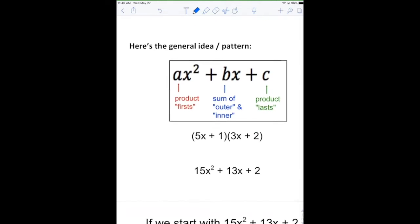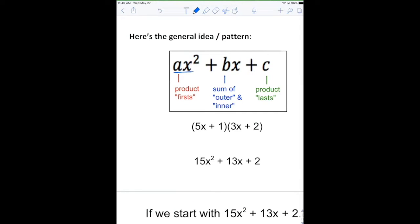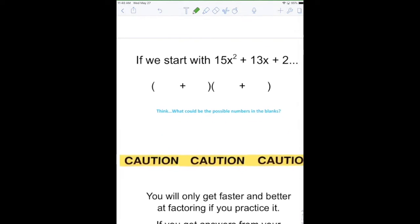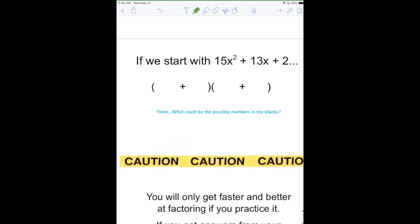This ax squared is always going to be the product of our firsts. It's going to be this 5x times this 3x. This c here is always going to be the product of our lasts. This 1 times this 2. The problem is figuring out how do we get the middle term. That's going to be the product of our inners and the product of our outers. And what ends up happening is you're just going to basically do trial and error.